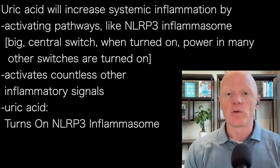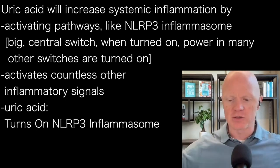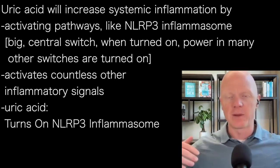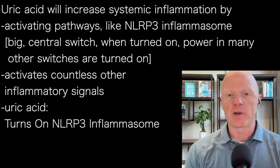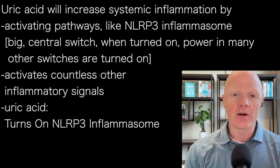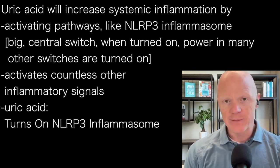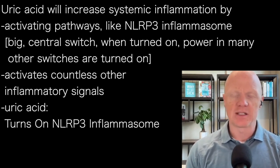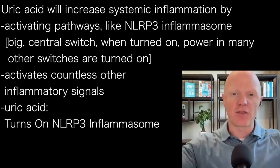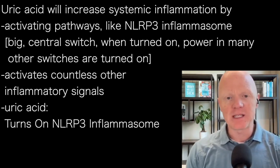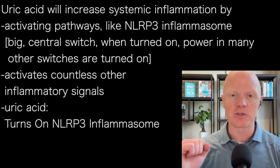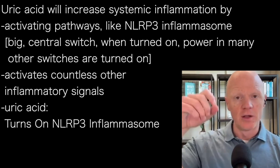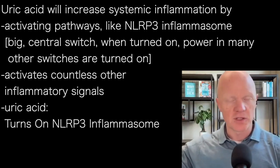Uric acid will increase systemic inflammation — inflammation occurring throughout the body, rather than inflammation coming from a wound or a general infection. It increases systemic inflammation by activating pathways like the NLRP3 inflammasome. The suffix '-ome' means it's a broad, encompassing thing. With the inflammasome, the NLRP3 can be imagined as a big central switch — when it's turned on, power throughout all of these other circuits is being turned on.